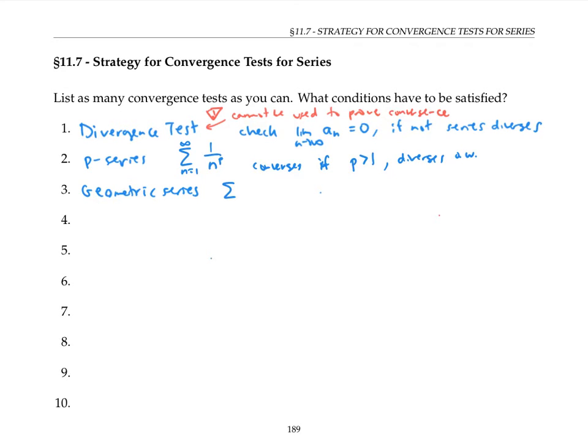A geometric series is of the form a times r to the n, where a is the first term (I start at zero here so it's really the first term), and r is the common ratio. This one's easy to check too, because it converges if the absolute value of r is less than 1, and diverges otherwise.